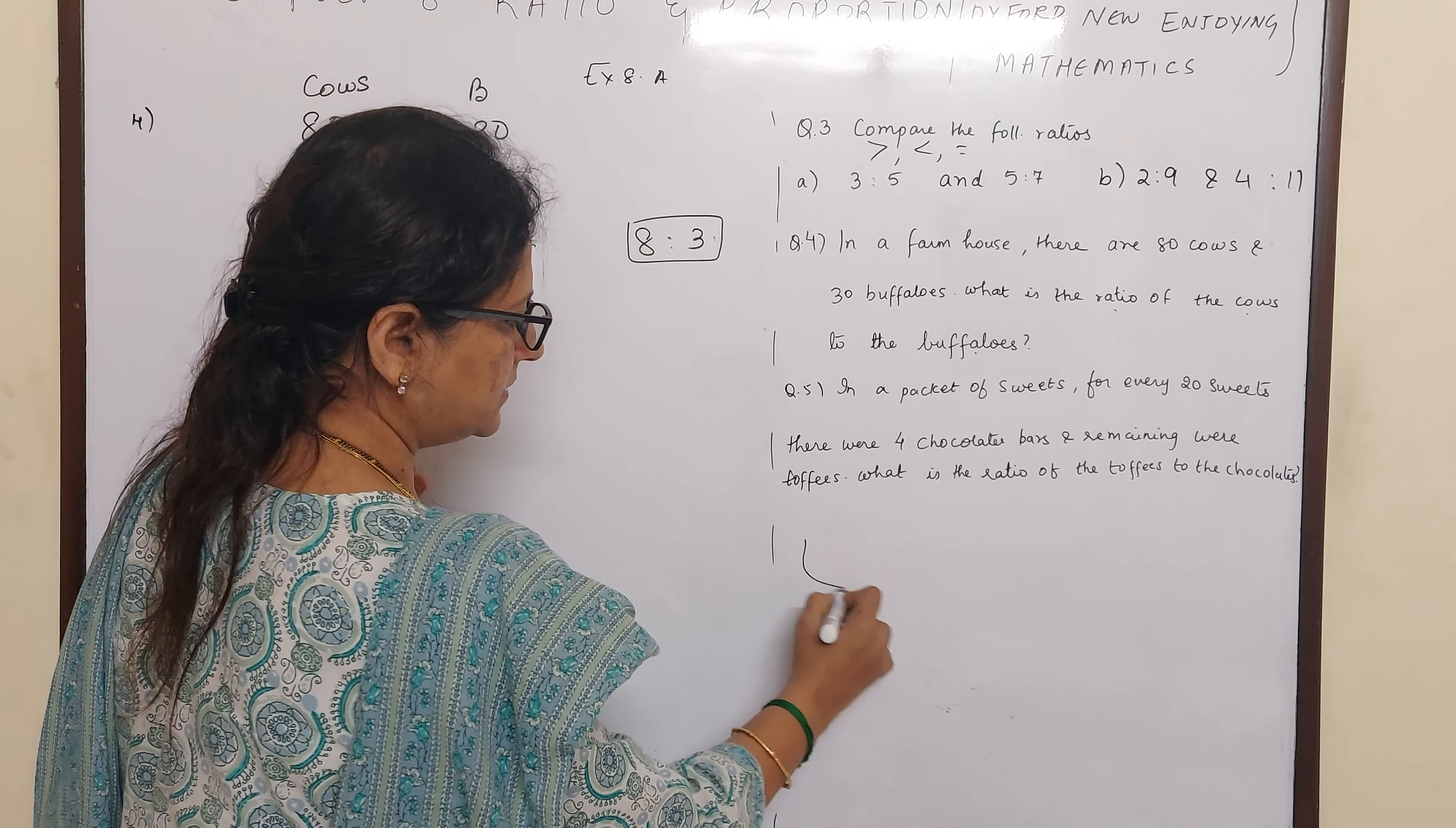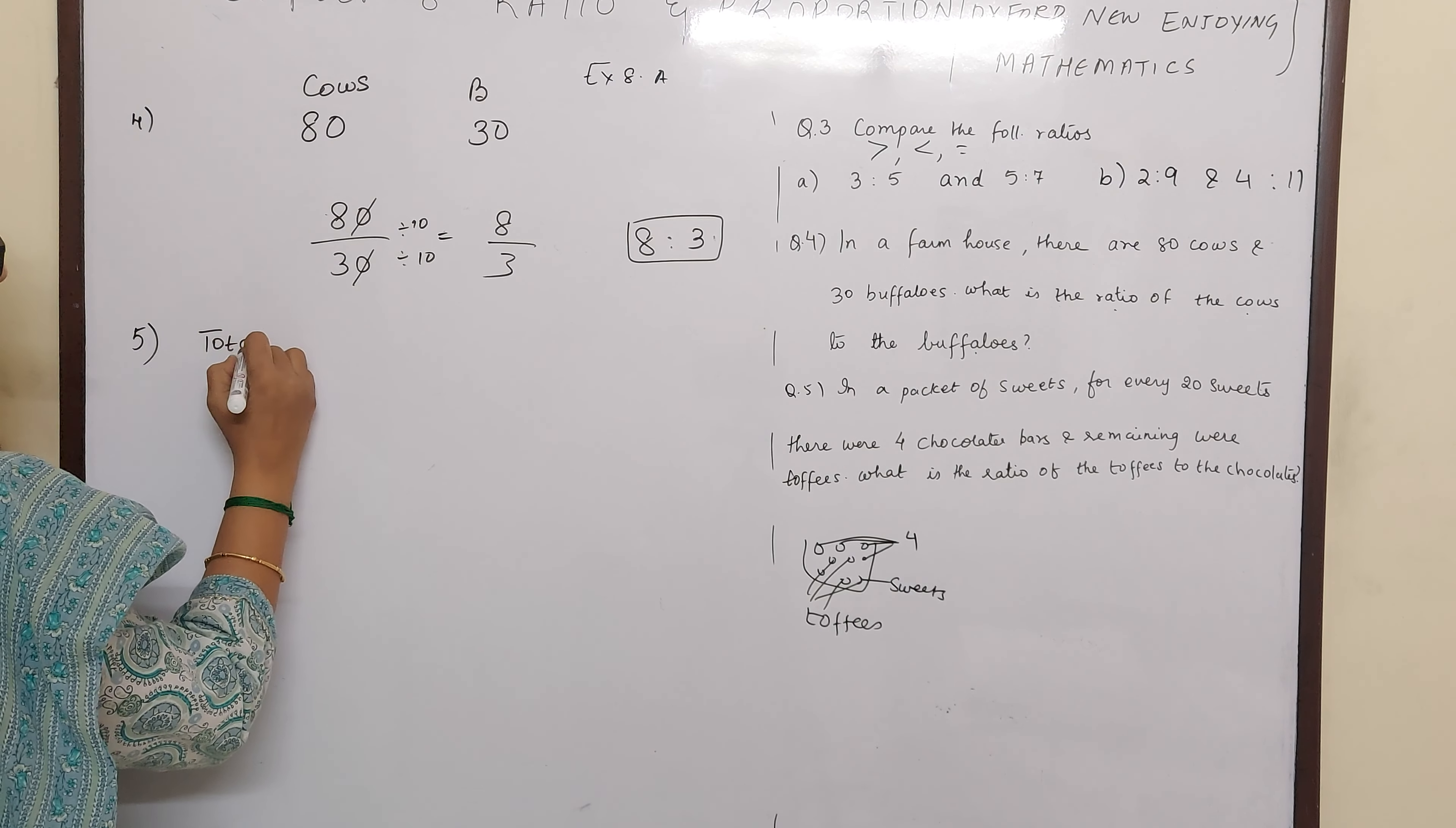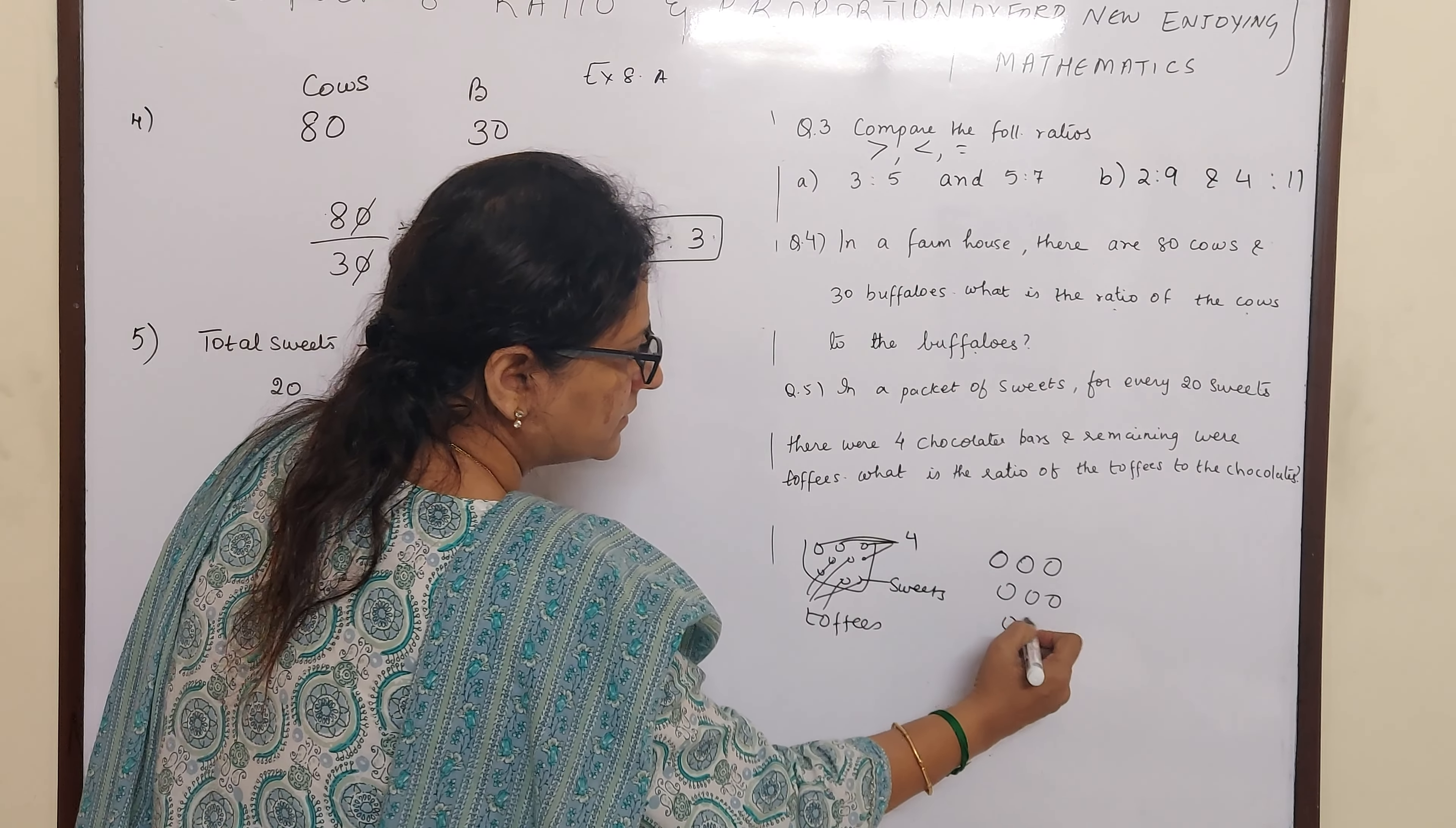Last question for this class. In a packet of sweets. Suppose there is a packet of sweets here. That means they are telling for every 20 sweets there were 4 chocolates. That means there are 20 sweets in this, in which 4 are chocolates. And the remaining were toffees. That means what are these remaining? They are all toffees. So you can calculate, right? Out of total sweets. Total sweets is 20. In that chocolates, if you minus 4 chocolates. That means remaining will be what? Remaining will be toffees. So 20 minus 4 is 16.